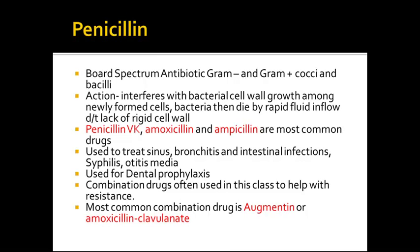Combination drugs are often used in this class to help with resistance. The most common combination drug is Augmentin, which is amoxicillin-clavulanate. Dental prophylaxis is used for anybody who has had heart valve surgeries, hip replacements, and knee replacements. However, some physicians are not prescribing dental prophylaxis as much due to antibiotic resistance. Anybody with a heart valve definitely needs dental prophylaxis, but some physicians are choosing not to do so for hip and knee replacements, as certain studies show the benefit does not outweigh the risks.